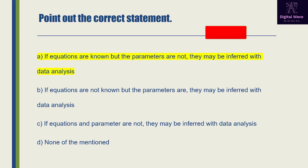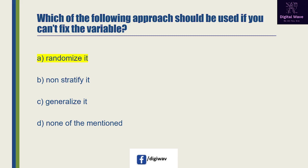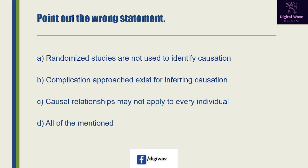Next question: which of the following approach should be used if you cannot fix the variable? Option A is 'randomize it', option B is 'non-stratify it', option C is 'generalize it', and the last option is none of the mentioned. The right answer will be A: randomize it, because if you cannot fix the variable, you should stratify it.